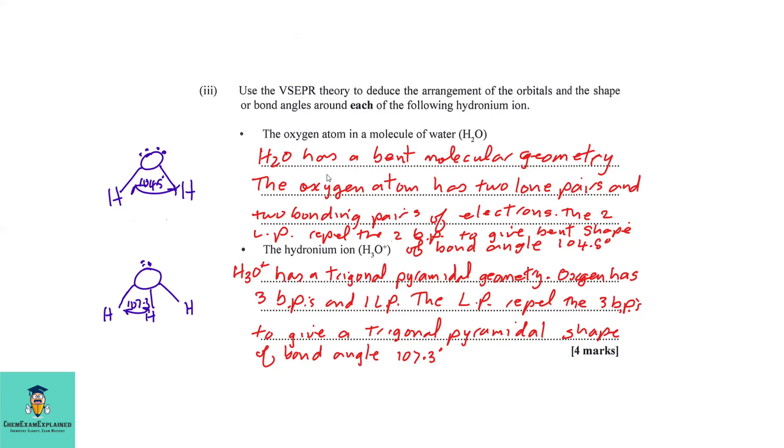So, firstly, we must know that water has a bent molecular geometry. The oxygen atom has two lone pairs and two bonding pairs of electrons. The two lone pairs will repel the two bonding pairs to give a bent shape of bond angle 104.5 degrees.